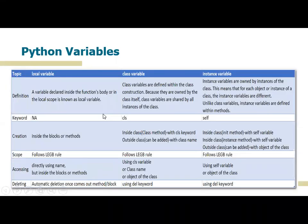In Python variables, if you consider the OOP concepts, we will have three types of variables: local variable, class variable, and instance variable. A local variable is a variable declared inside the function's body or in the local scope. Class variables are defined within the class construction but outside of all the methods or functions, because they are owned by the class itself and shared by all instances of the class.